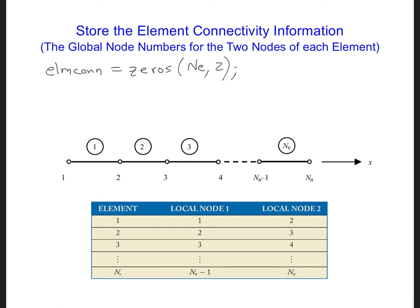The numbers stored at each i, j position of the element connectivity matrix will be the global node number for the specified element and node number for that element.